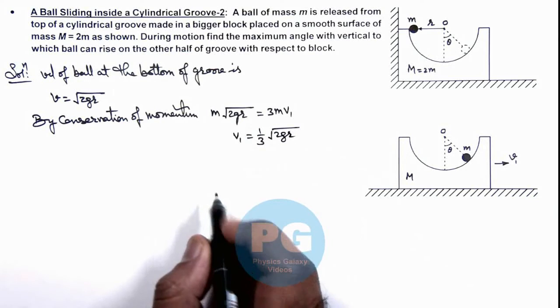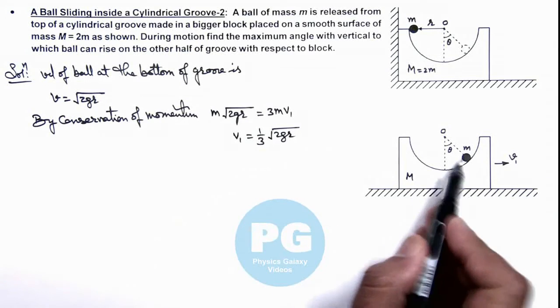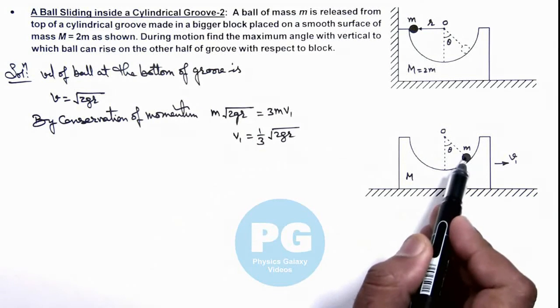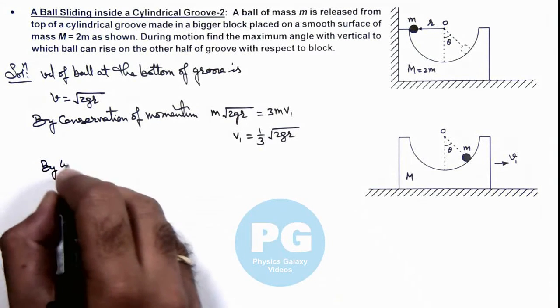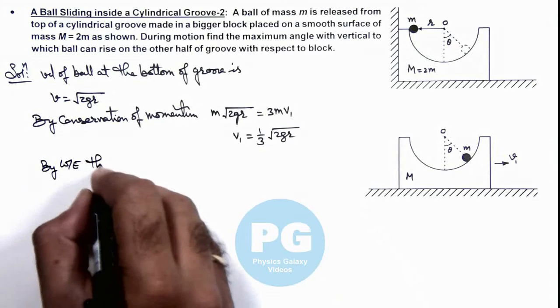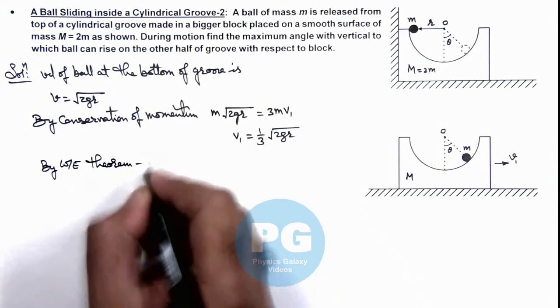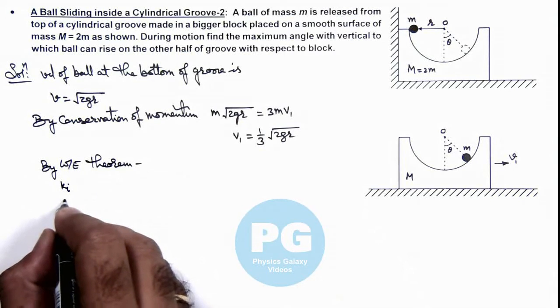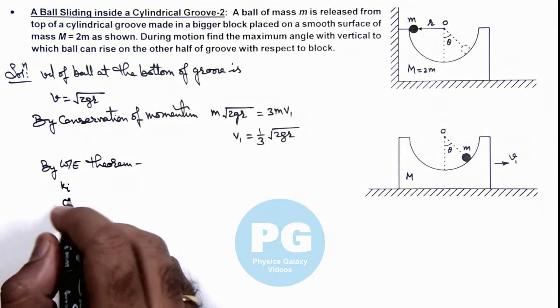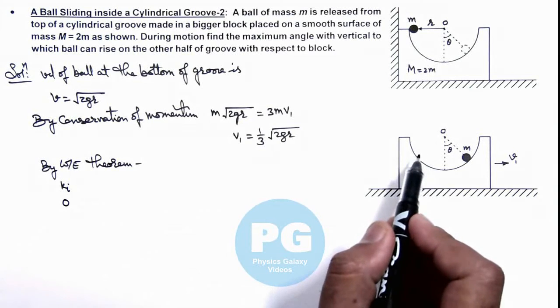Here we are required to find the maximum angle θ where it comes to rest with respect to bigger block. So we can write by work-energy theorem: as initial kinetic energy of system was zero, the overall work done is by gravity.